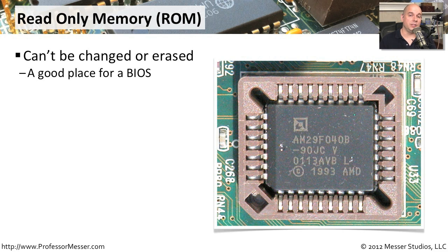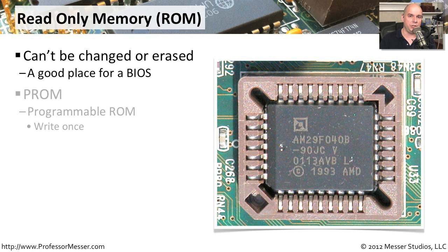One kind of memory we often don't directly refer to is read-only memory. This is very common when storing BIOS information on our computer — the BIOS is something we generally don't change, so it is a read-only memory in the way we use it. Read-only memory has many different types. A very old type is PROM, programmable read-only memory, where we program the chip itself, fasten it to the motherboard, and that particular code is permanently burned into that chip.